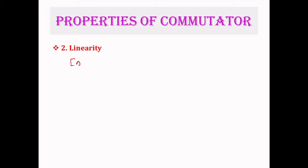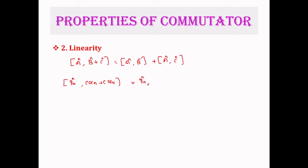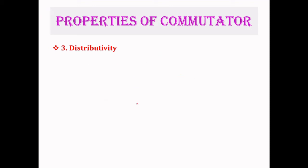Next is the linearity property: [A, B+C] = [A,B] + [A,C]. For example, [px, c·αx + c·αy] = [px, c·αx] + [px, c·αy]. Next is the distributivity property: [A, BC] = [A,B]·C + B·[A,C]. You can take the first operator to the right side and the second operator to the left side.